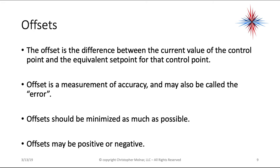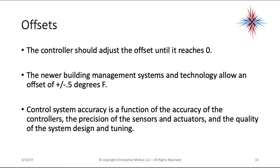Offsets are the difference between the current value of the control point and the equivalent set point — also referred to as the error. Offsets should be minimized as much as possible; they can be positive or negative, and the controller should adjust until the offset reaches zero. Newer building management systems allow an offset of plus or minus 0.5 degrees Fahrenheit. Control system accuracy is a function of the accuracy of controllers, precision of sensors and actuators, and the quality of building design and tuning.